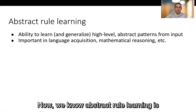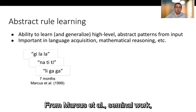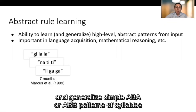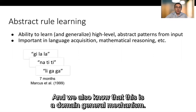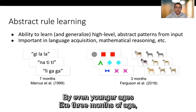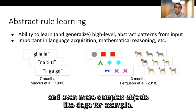Now we know abstract rule learning is a robust mechanism from infancy. From Marcus et al. seminal work we know that seven-month-old infants are able to learn and generalize simple ABA or ABB patterns of syllables from just two minutes of exposure and we also know that this is a domain general mechanism. By even younger ages like three months of age infants can learn simple patterns of shapes and even more complex objects like dogs for example.